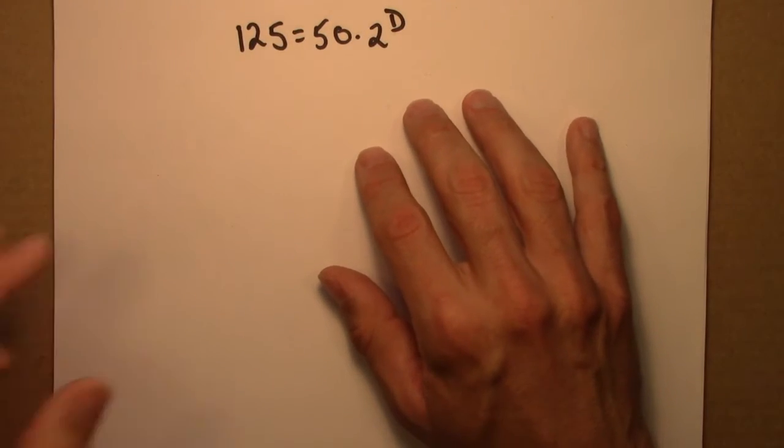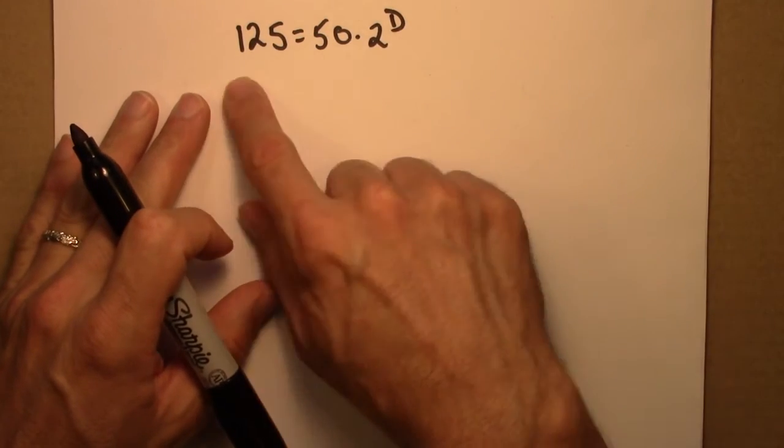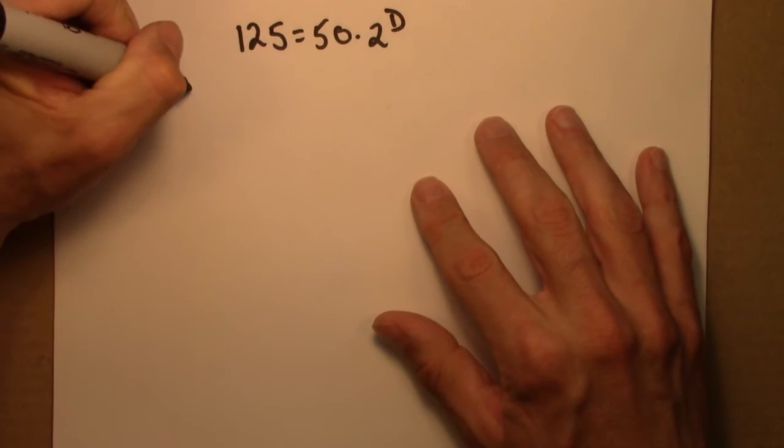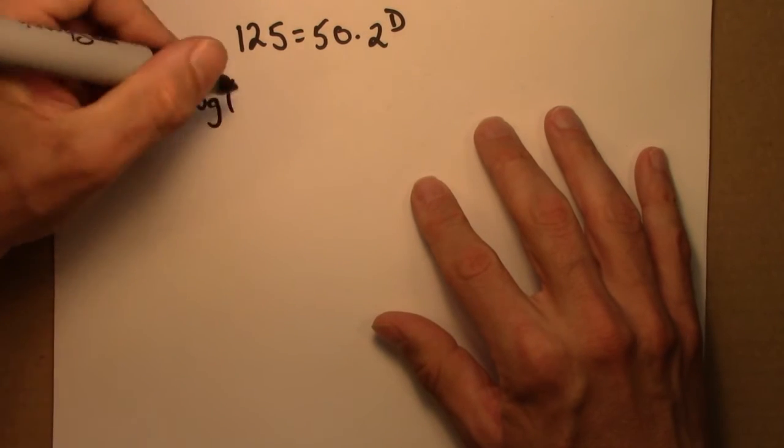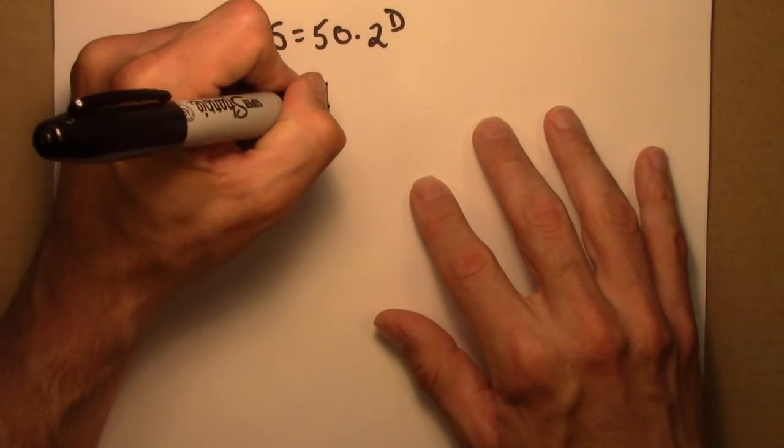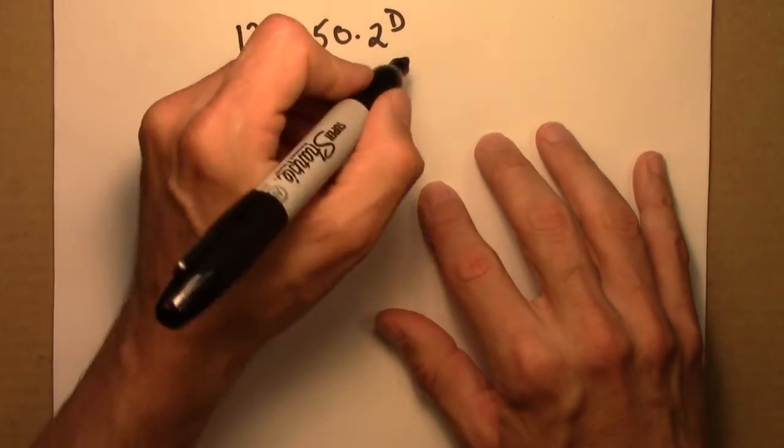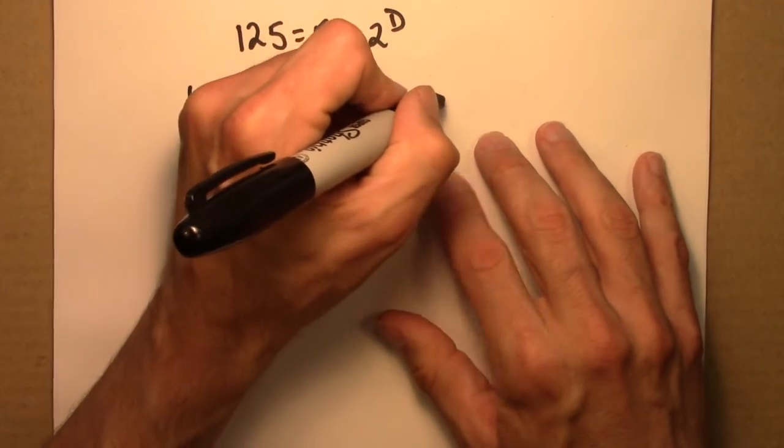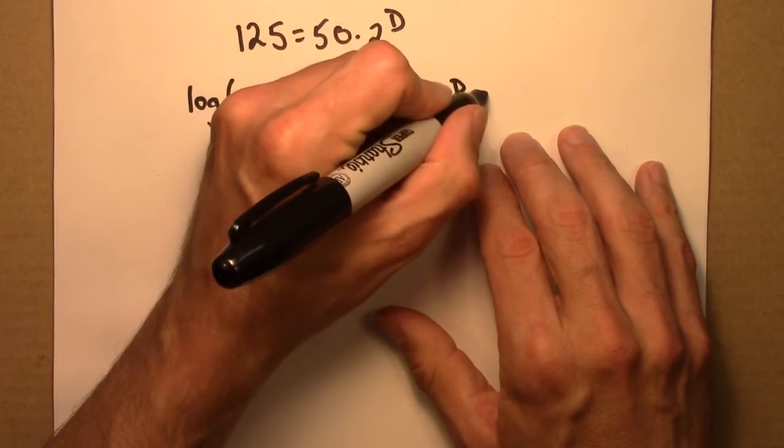So we want to isolate d. Let's take the logarithm of both sides. Log 125. And I need to take the logarithm of the entire right-hand side, 50 times 2 to the d.